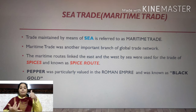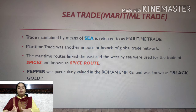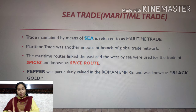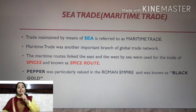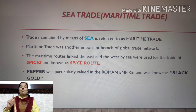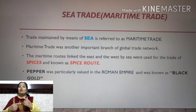Now we will see maritime trade, also known as sea trade — trade maintained by means of the sea. This is referred to as maritime trade and was another branch of the global trade network. The most popular route was the Spice Route, especially for black pepper — kali mirch — which was particularly valued in the Roman Empire and was known as Black Gold.